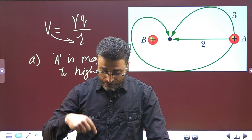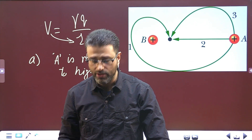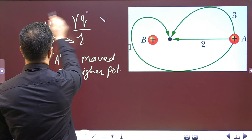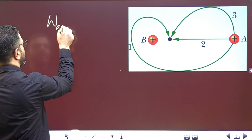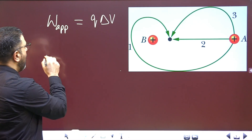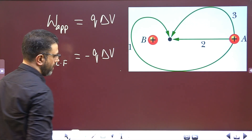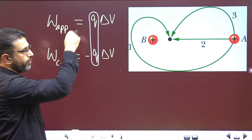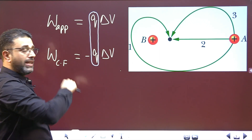Is the work done by our force — the external or applied force — and by the electric field due to B, positive, negative, or zero? Work done and potential are related as follows: work done by the external agency is q times delta V, and work done by the field — the conservative field — is negative of q times delta V. Note the difference of plus and minus between the two.